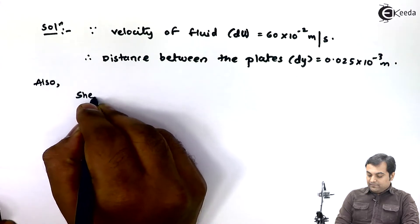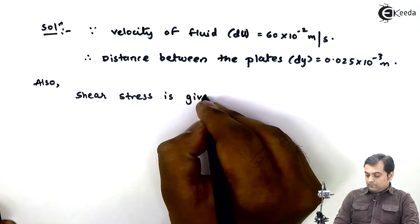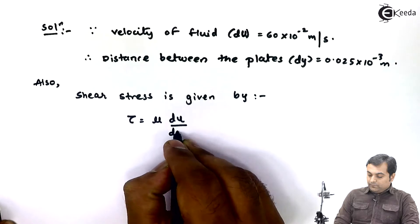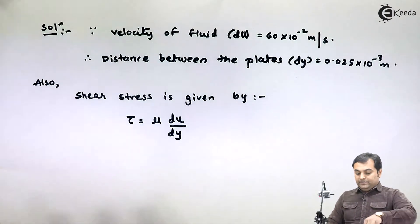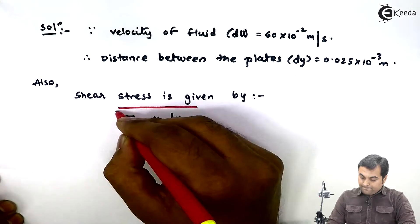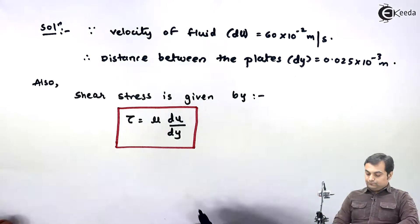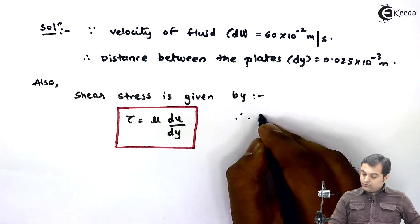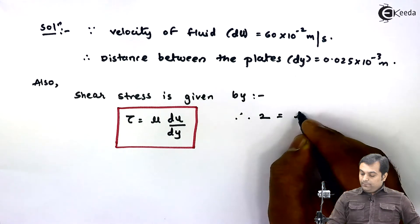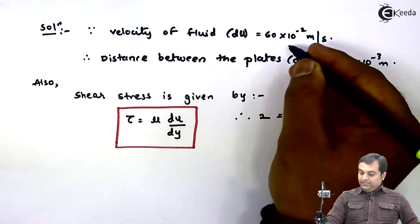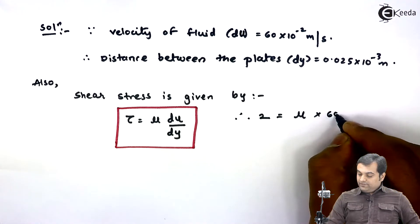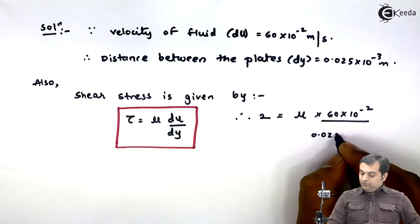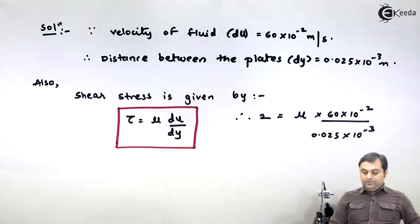Since the question is to find dynamic viscosity, and we have dynamic viscosity in the formula of shear stress, shear stress tau is equal to mu into du by dy — from Newton's law of viscosity. Putting the values: tau is 2 Newton per meter square, mu is what we have to calculate, du is 60 into 10 raise to minus 2, and dy is 0.025 into 10 raise to minus 3.